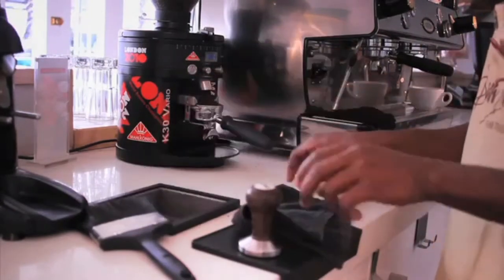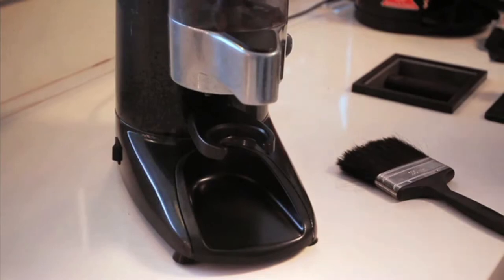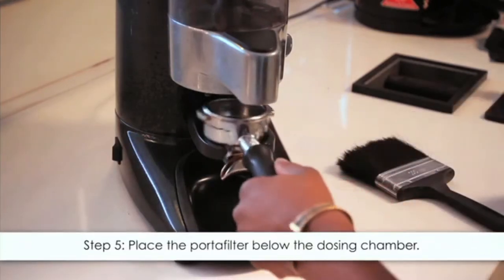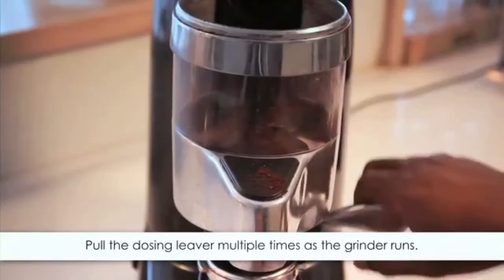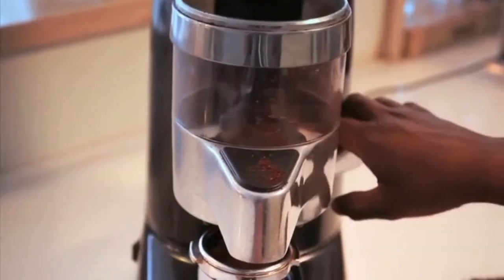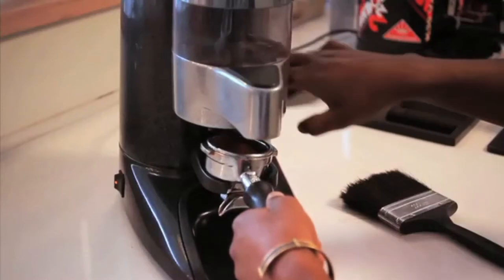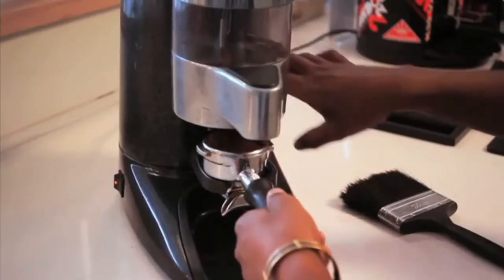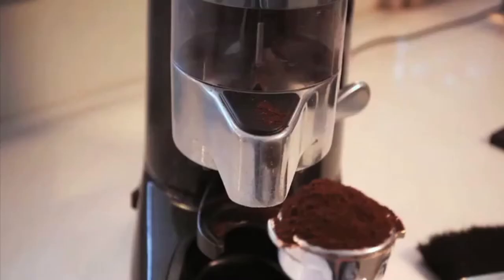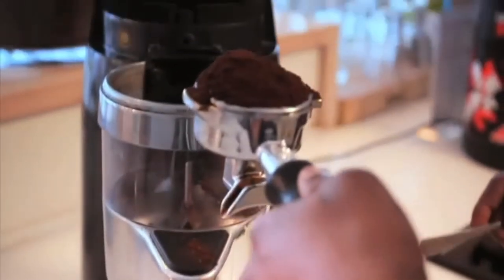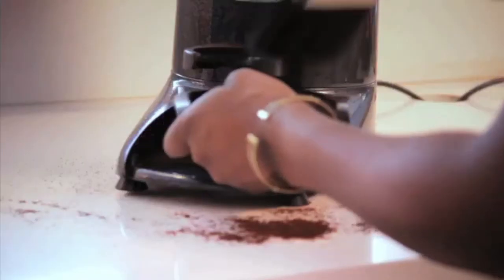Step five: place the portafilter below the dosing chamber and pull the dosing lever multiple times. As the grinder runs, the ground coffee will fall into the portafilter. When the portafilter is full, switch off the grinder but continue to pull the dosing lever until there is a small mound of coffee in the portafilter.